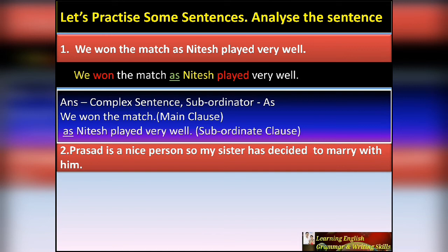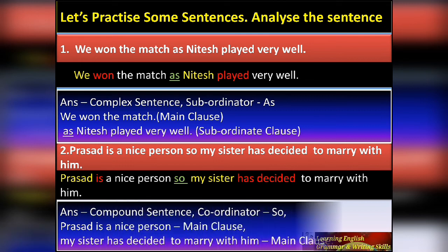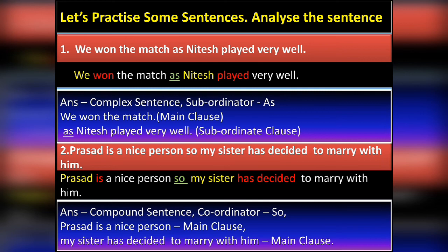Second practice sentence: 'Prasad is a nice person so my sister has decided to marry him.' Two sentences joined by 'so'. Subject 'Prasad', finite verb 'is'; subject 'my sister', finite verb 'has decided'. 'So' is a coordinator — from FANBOYS, S = so. When a coordinator joins sentences, both sentences are main clauses. Therefore this is a compound sentence. Write: compound sentence, coordinator is 'so', both sentences are main clauses.